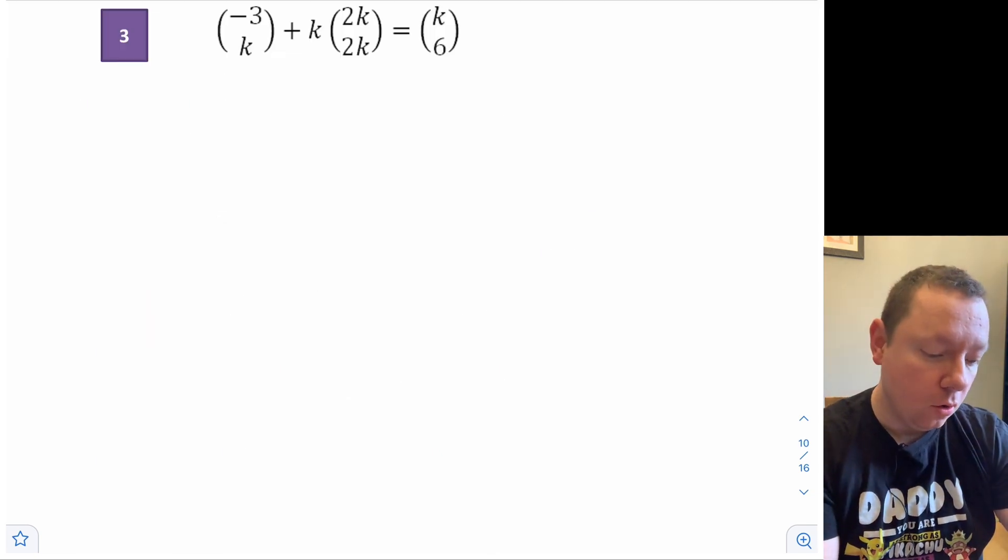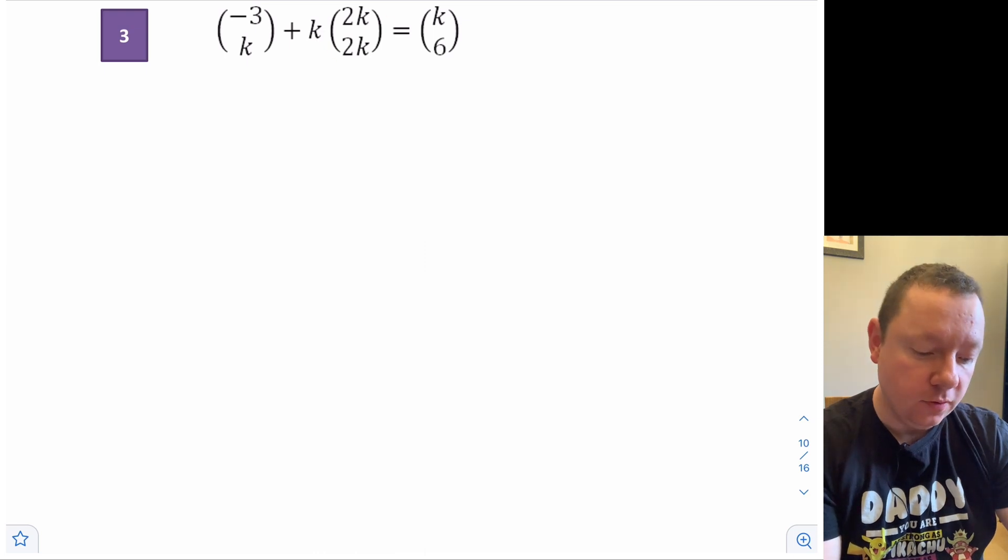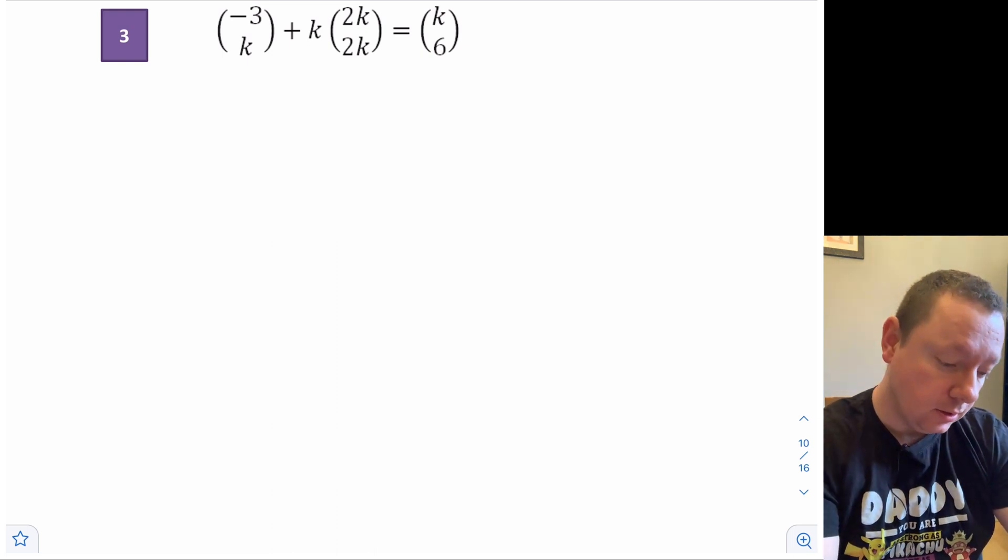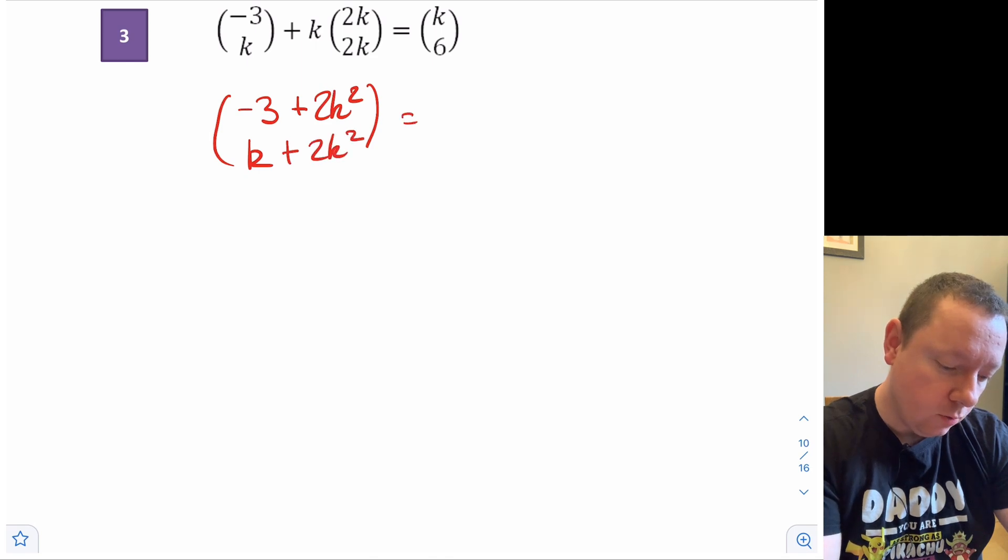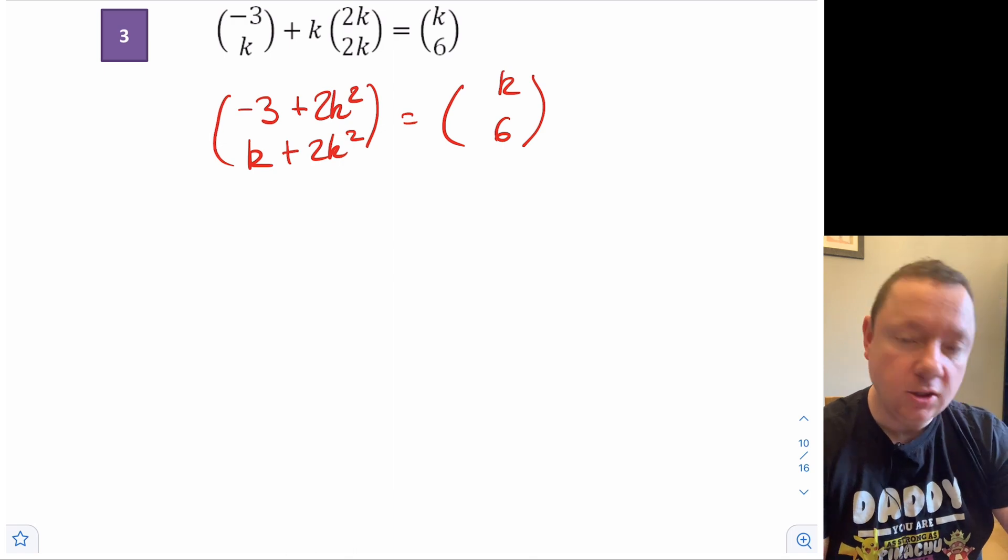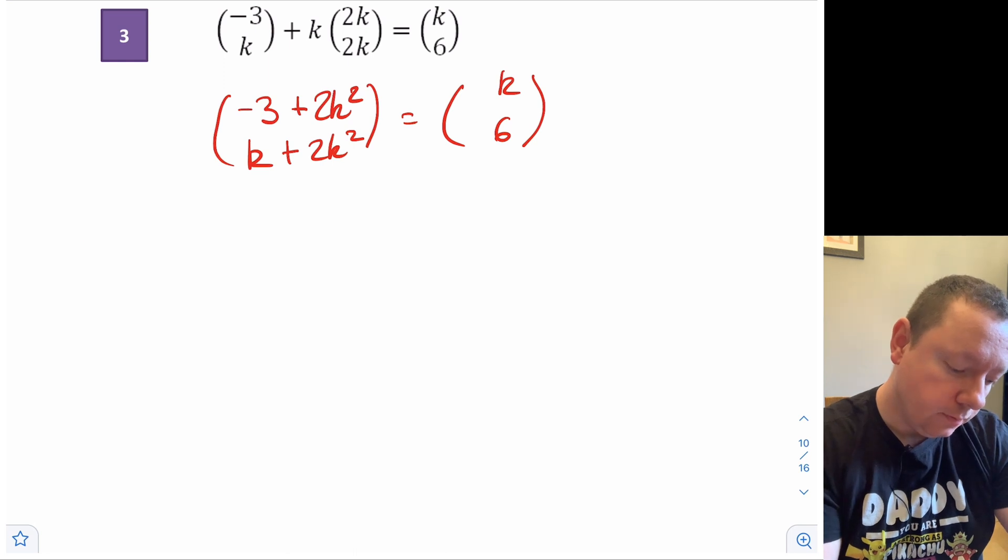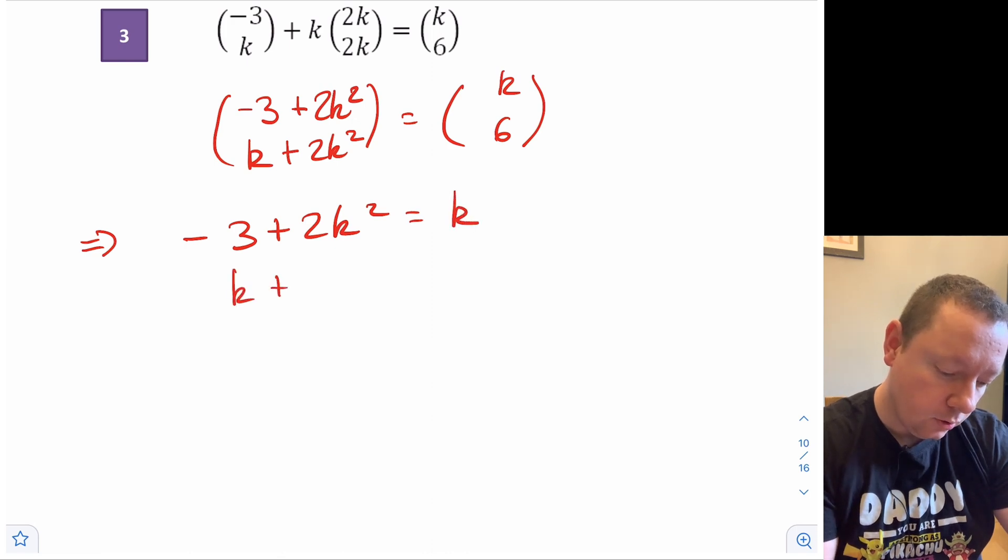So look at example 3. We've got this vector plus k times this vector, and we're saying it equals this vector. So we'll have to do some basic manipulation to work out what k is. So let's just start doing that. For our top element on the left-hand side, we're going to have -3 plus 2k². And for our bottom element, we've got k plus 2k². And we're saying that that equals the right-hand side, k, 6. So we've got two vectors that equal each other. That means this element at the top must equal this element at the top, and this element at the bottom must equal this element at the bottom.